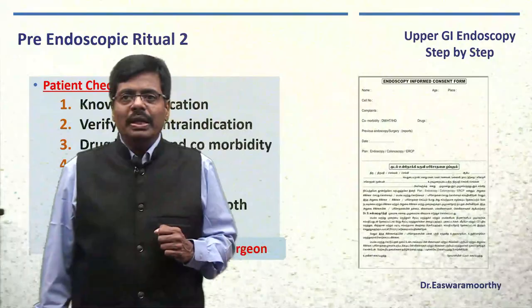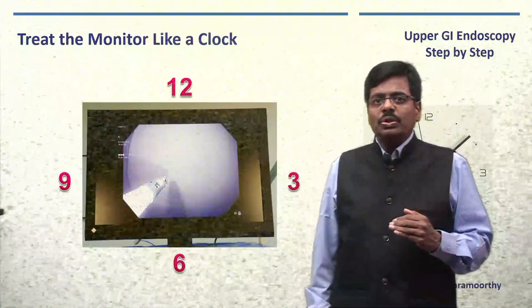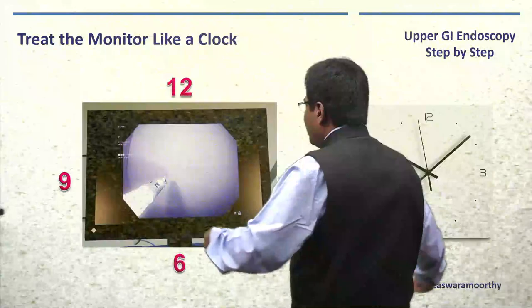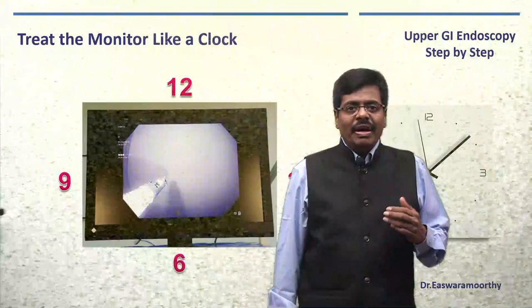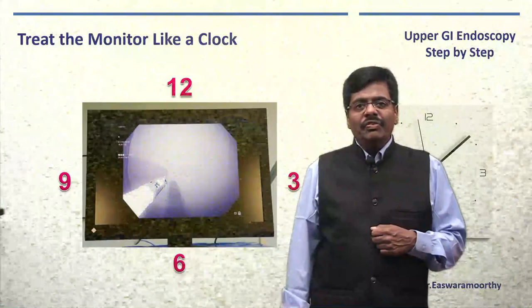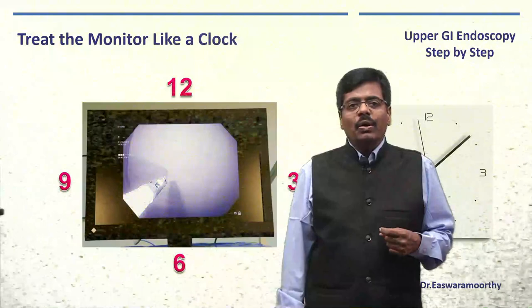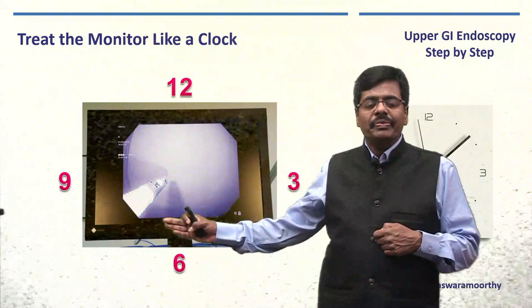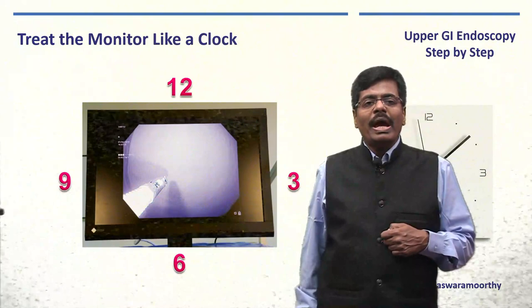There is some endoscopy language you should know. Treat every monitor screen like a clock face — six o'clock, three o'clock, and so on. This way, whenever I describe a lesion, you will understand its position. For example, in an Olympus scope during upper endoscopy, the accessory channel where biopsy forceps come out is around the seven o'clock position; in a pediatric scope it may be at five o'clock.